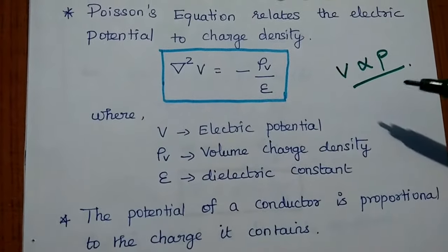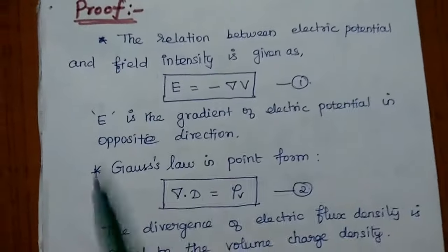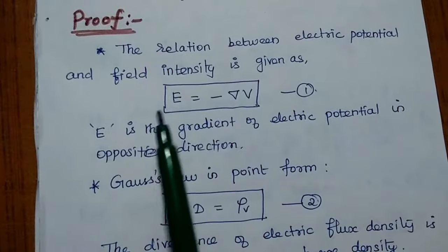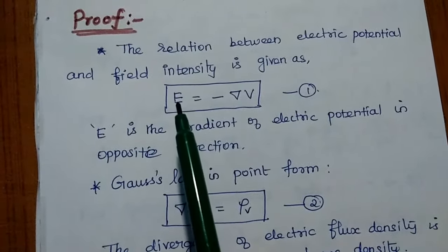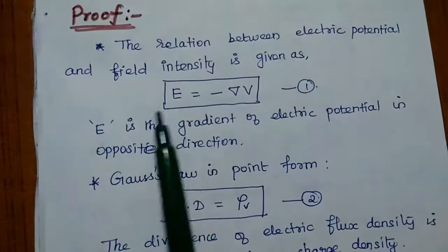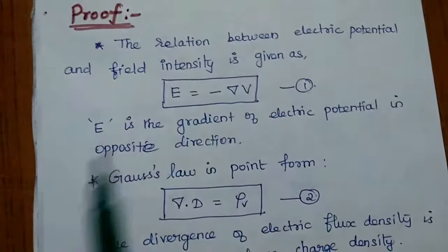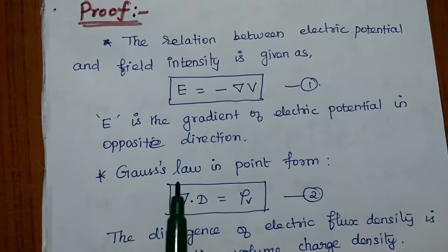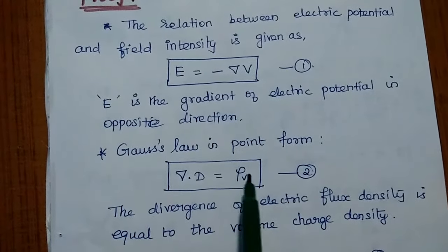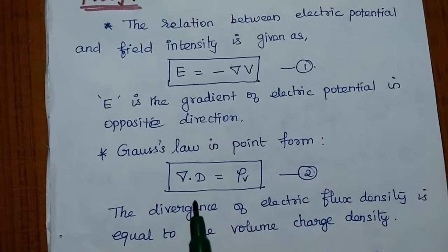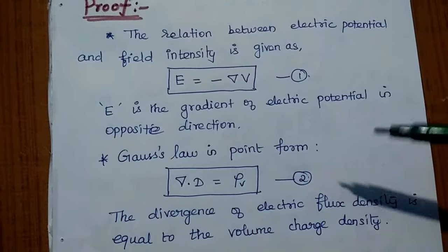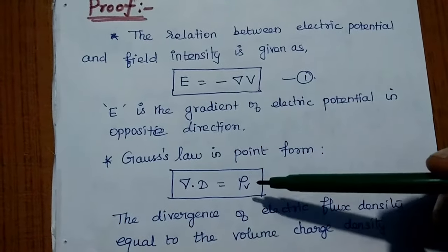We are going to prove this concept. We need to consider two important concepts. The first is the relation between electric potential and field intensity — the direct relationship between electric field intensity and potential. The second is Gauss's law in point form: the divergence of electric flux density is equal to the total volume charge density. These two equations are very important to relate potential and volume charge density.